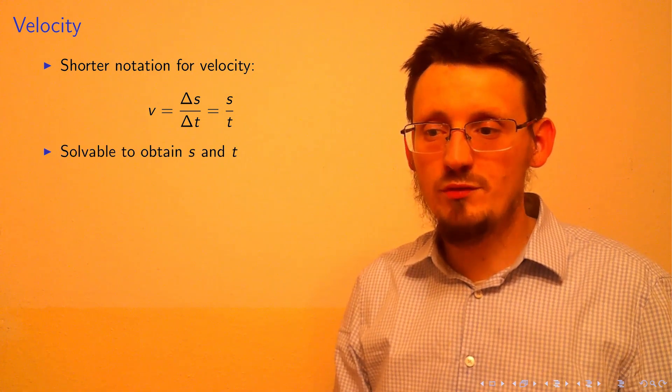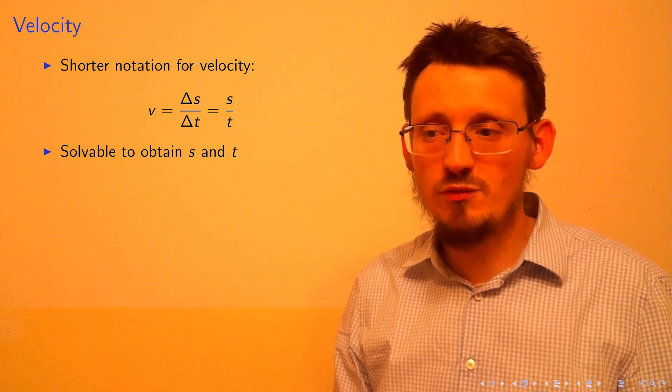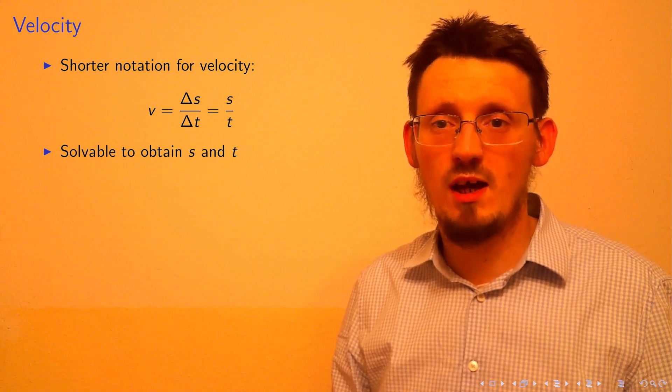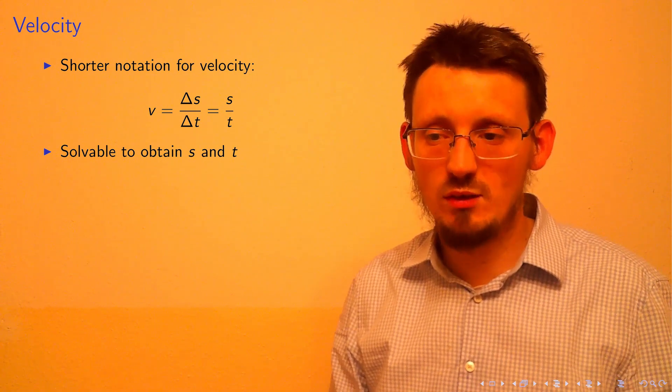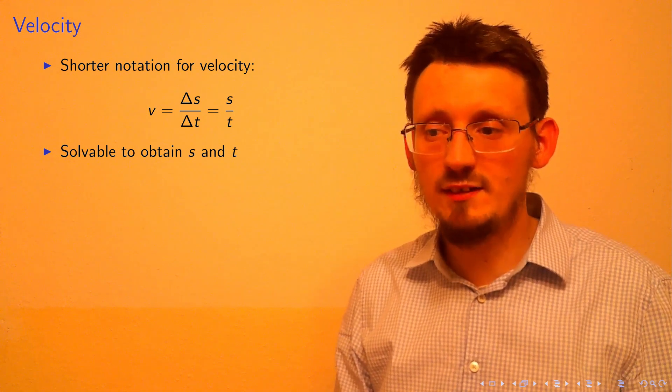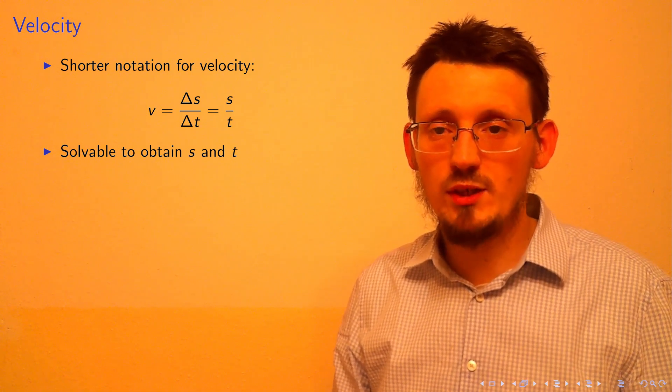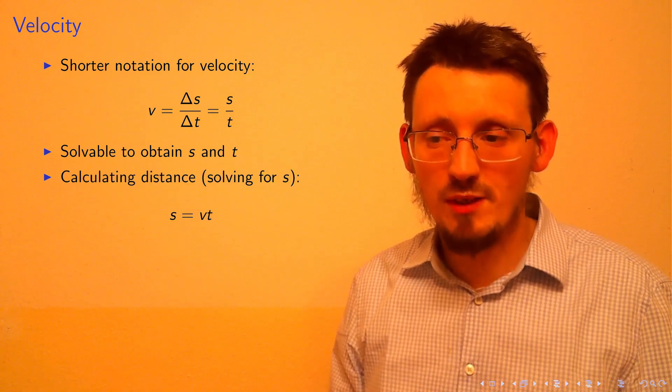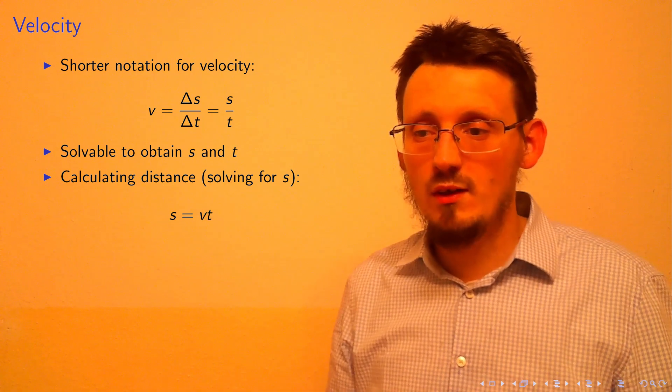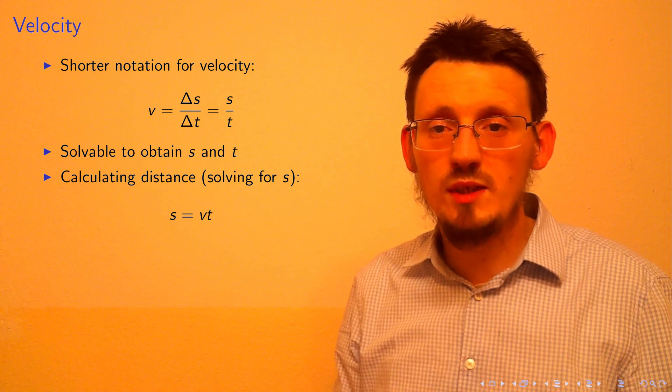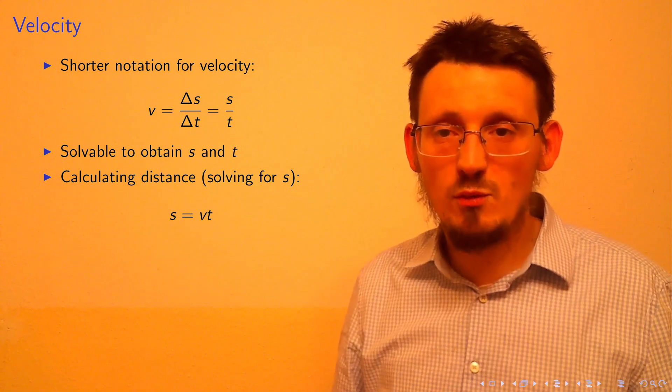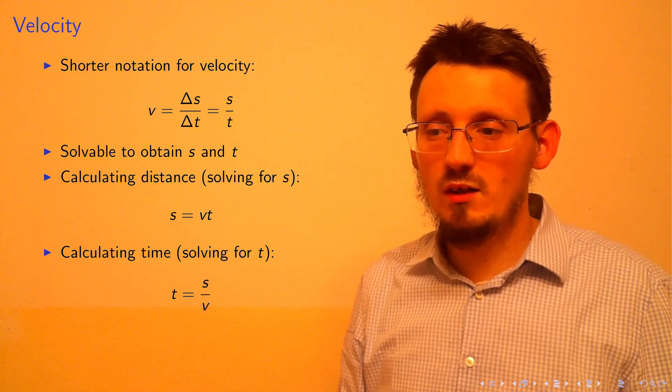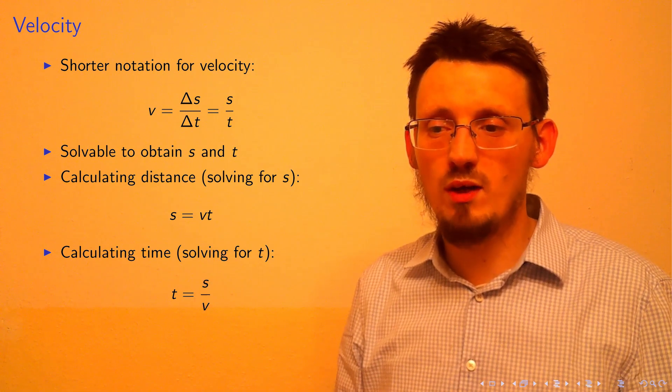Now we want to solve this formula for distance and time depending on which parameters are given. If v and t are given, solve for distance s by multiplying with t, giving s equals v times t. If v and s are given, solve for t, giving t equals s over v.